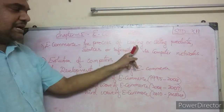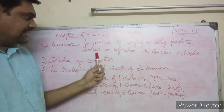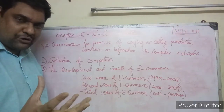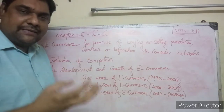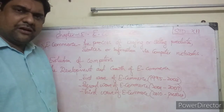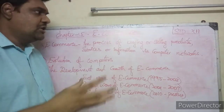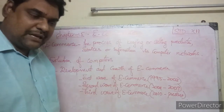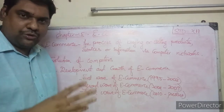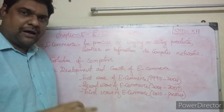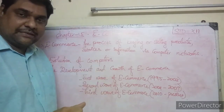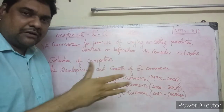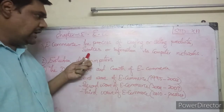Electronic commerce is the process of buying or selling products, services, or information through computer networks. Products means physical things you can touch and see — for example, mobile devices, cars, bikes, or food items. These are products you can touch and see. Online services are things you cannot touch and see, and information such as online services are also part of e-commerce.